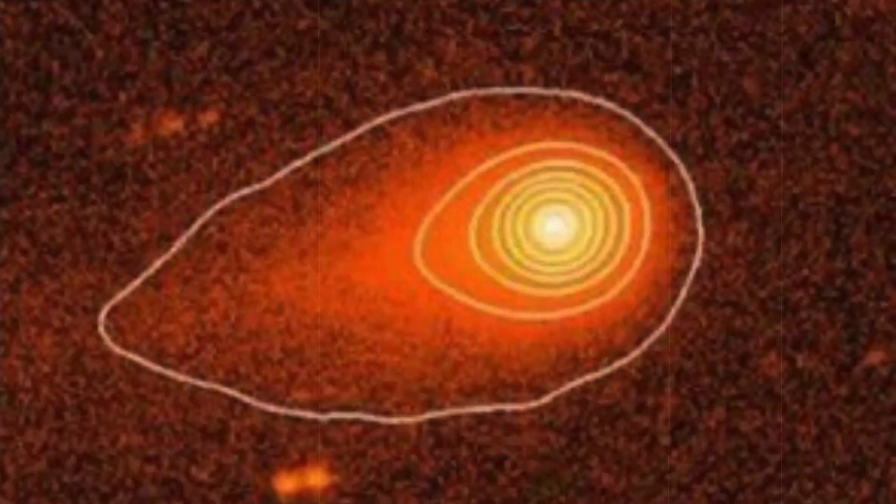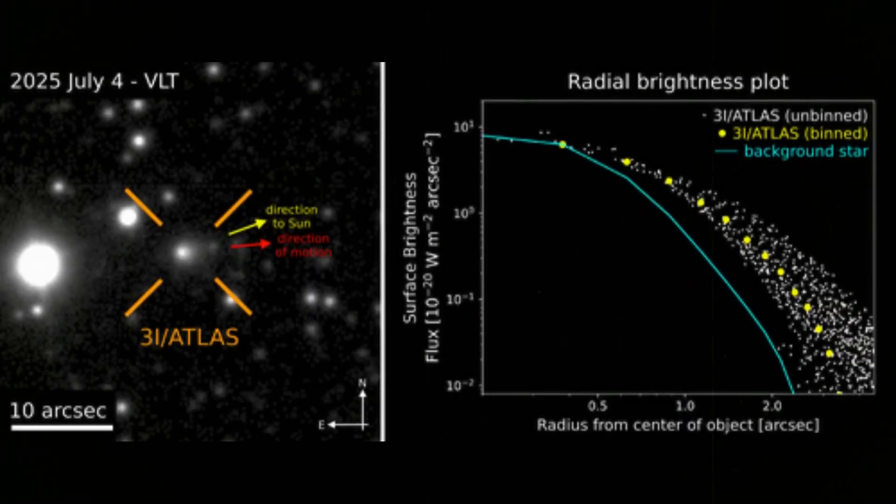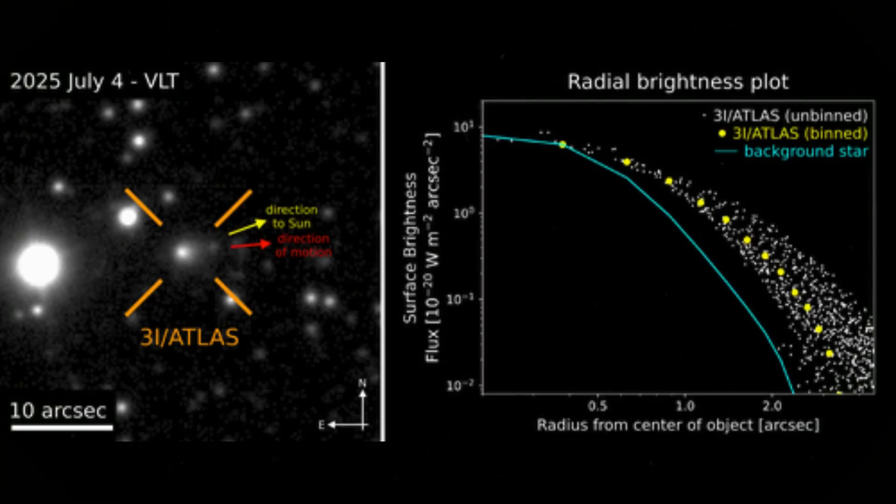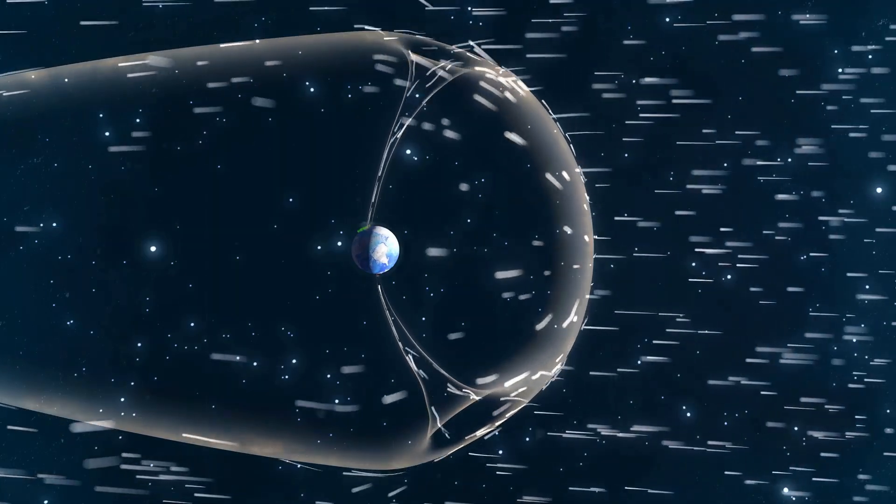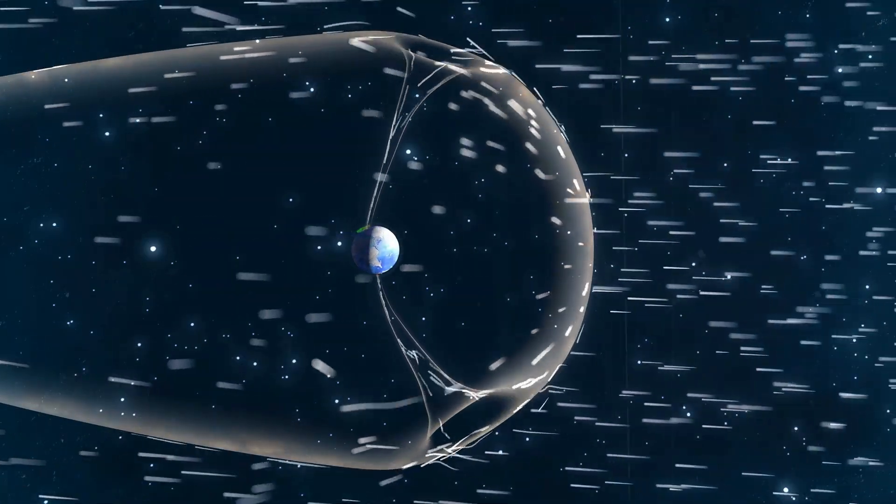Carbon dioxide dominates its halo, but there may be exotic ices or dust compositions humanity has never studied up close. When this cloud of alien material interacts with the solar wind, what unexpected reactions might unfold?